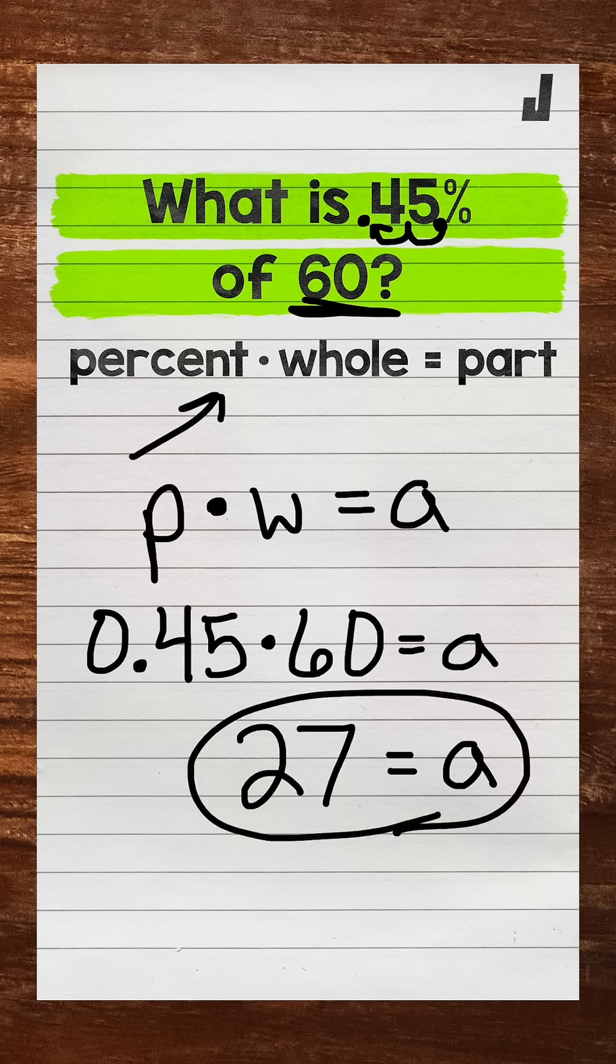So the part is 27. What is 45% of 60? Well, 27 is 45% of 60.